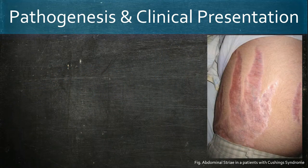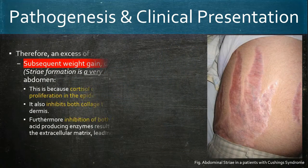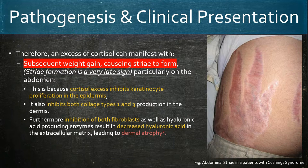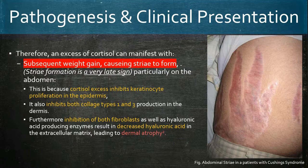A well-known sign of Cushing's syndrome is striae. However, this is a very late sign and may well be absent. Cortisol excess inhibits keratinocyte proliferation in the epidermis, as well as inhibiting collagen types 1 and 3 production in the dermis. Additionally, fibroblasts and hyaluronic acid-producing enzymes are inhibited, leading to dermal atrophy.